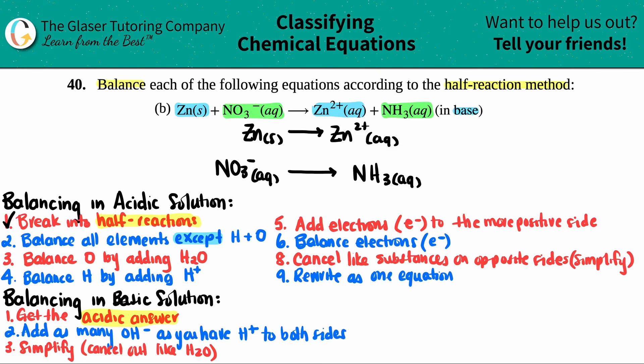Now step two. We balance all the elements except for hydrogen and oxygen. I don't care about oxygen and hydrogen at this stage of the game. I'm only looking at all the other elements. There's only two of them here, there's zinc for the top one, and then there's nitrogen for the bottom one. I have one zinc here and I have one zinc here, so that's already balanced. And then on the bottom, I have one nitrogen and one nitrogen, so that's balanced. This step was already balanced for me, so we just keep moving.